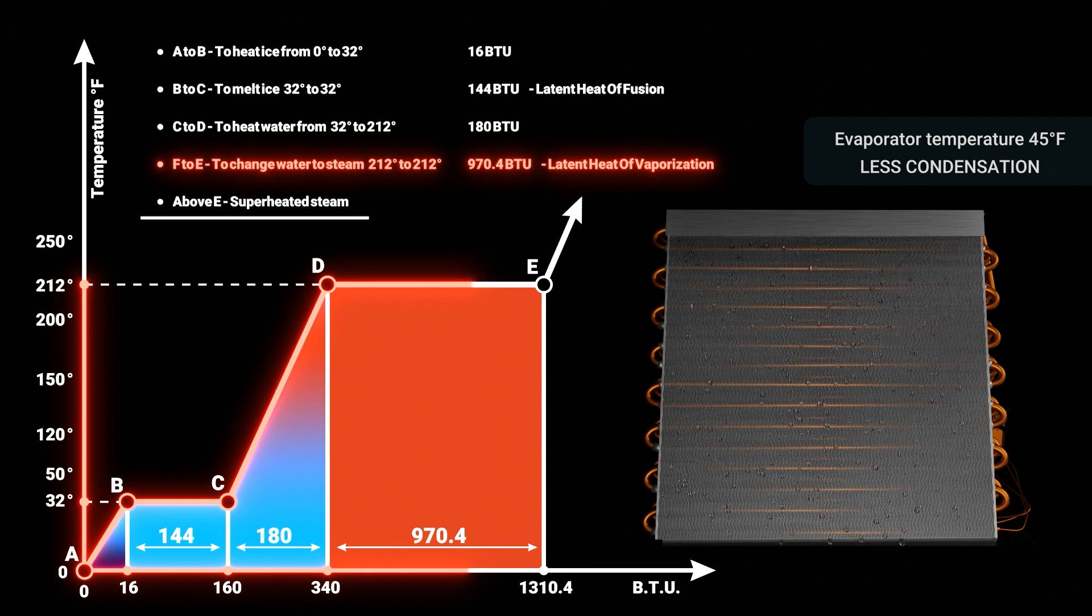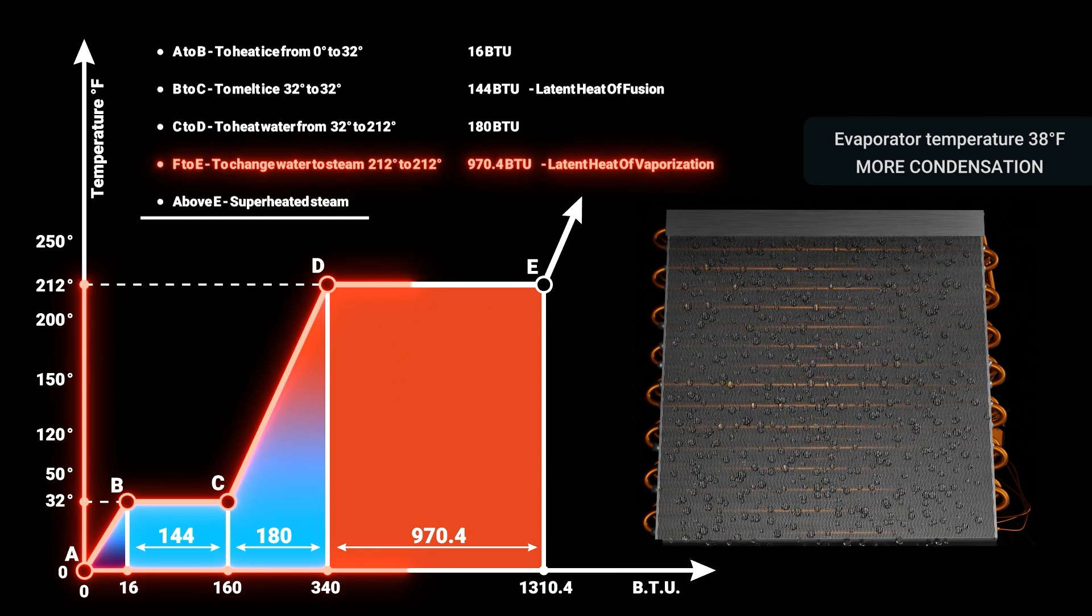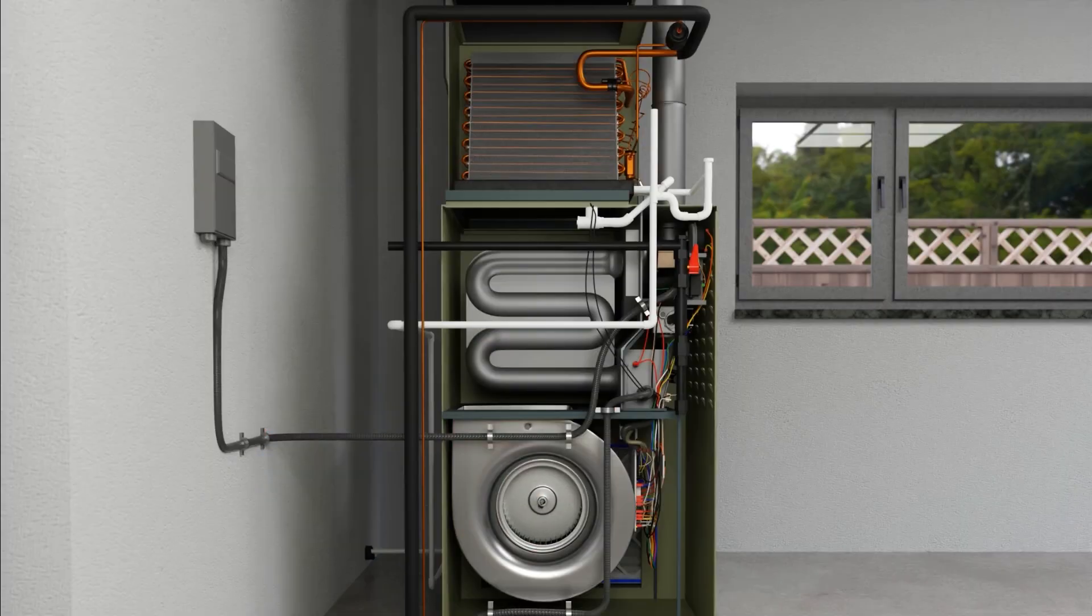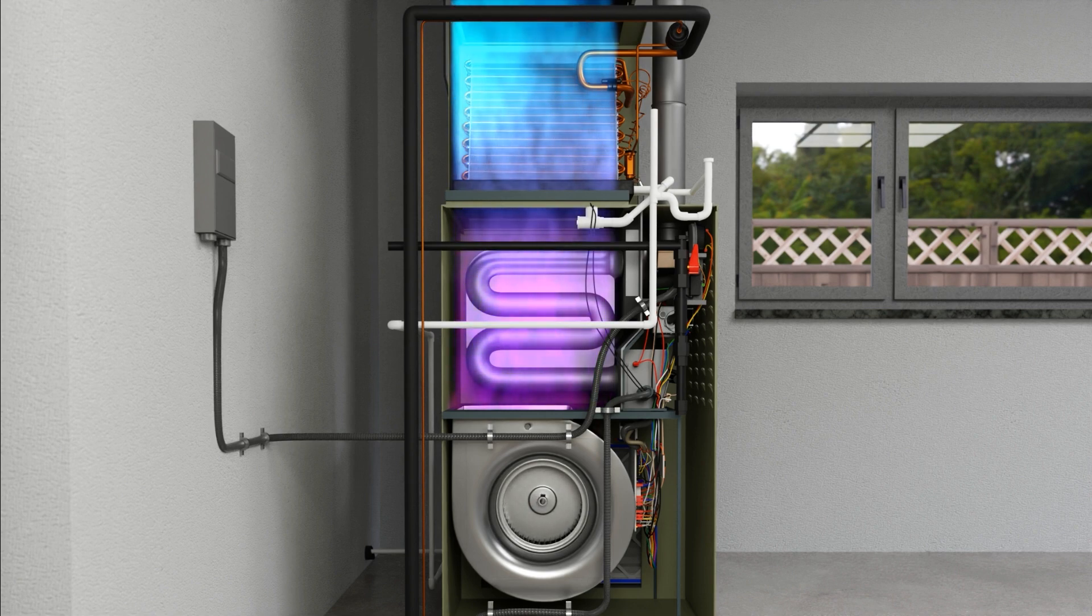In very simple terms, the colder the evaporator coil is, the more moisture it will remove from the home. For an air conditioner to be ideal at removing latent heat or moisture from the home, the evaporator coil needs to be at a low enough temperature, and the air conditioner needs to run. Humidity is only removed from a home when the air conditioning system is running.